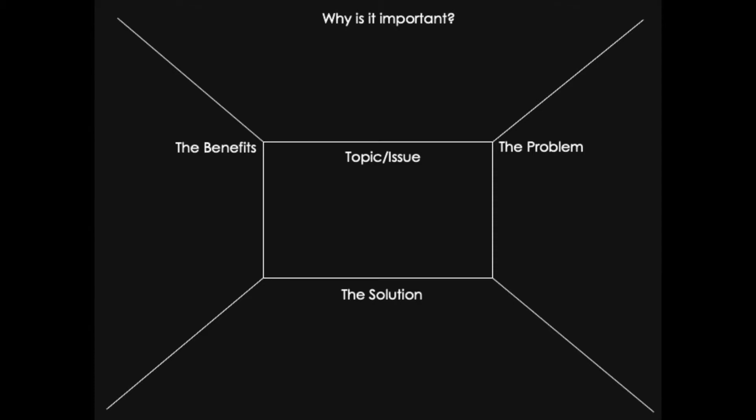So you have a central section which is labeled the topic or issue, and then outer sections that are labeled: why is it important, what is the problem, what is the solution, and what are the benefits of solving this problem.